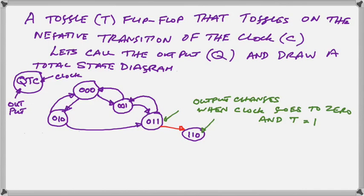So what's the next thing we can do? The next thing we can do is to make the clock go high again. And remember, nothing really happens if the clock goes high, so I just go from 110 to 111.